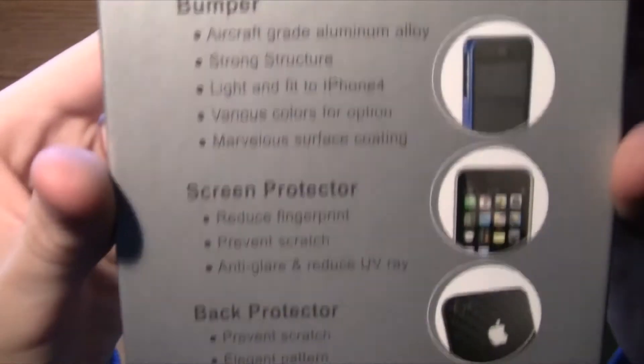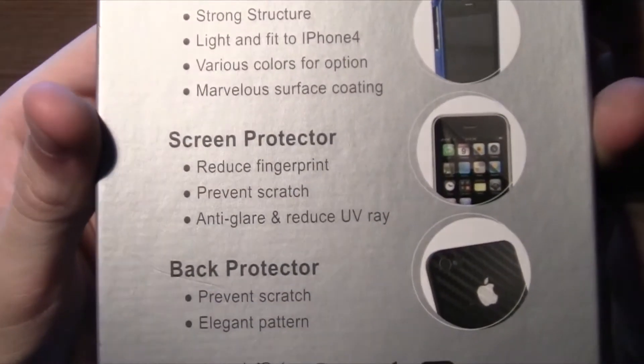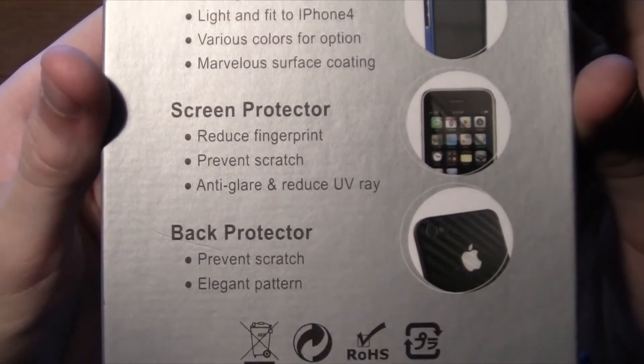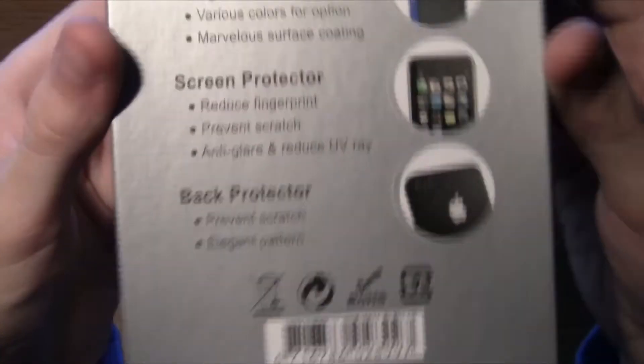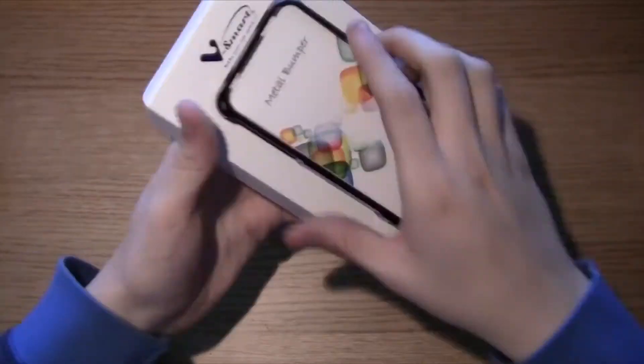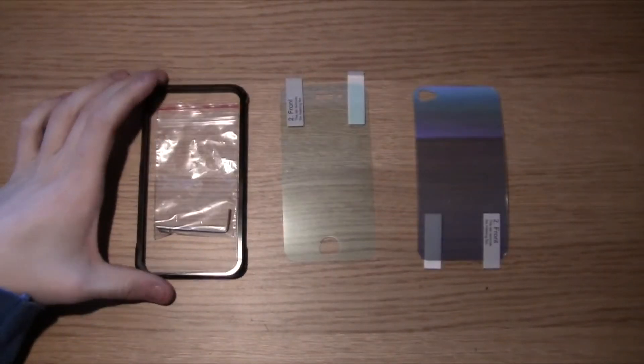As you can see there, as well as the bumper, you get a screen protector for the front and a back protector. The back protector I received was slightly different to the one pictured. Mine had a mirrored effect rather than a graphite effect. I'm not sure if they're all like that but I thought I'd mention it anyway.